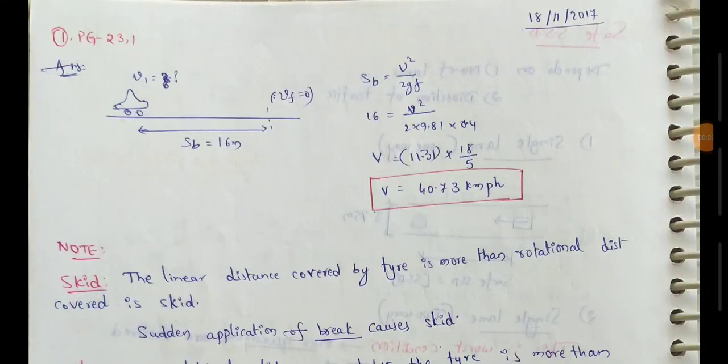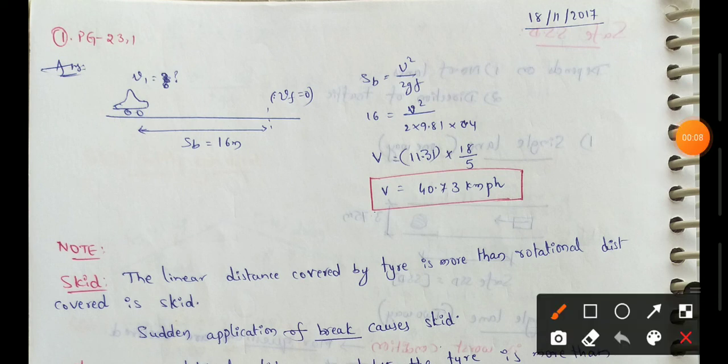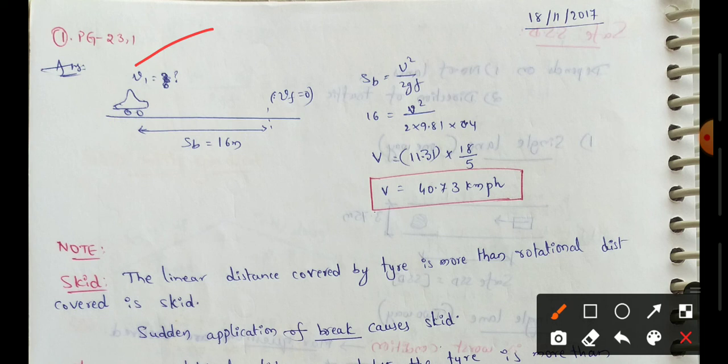Next topic: Stopping Sight Distance (SSD). We have a solved example problem. The brake is applied on a vehicle which has a skid distance of 16 meters before coming to a stop. The average coefficient of friction between tires and the pavement is 0.4. We need to find the speed of the vehicle before skidding.